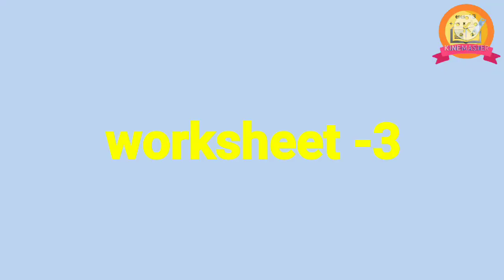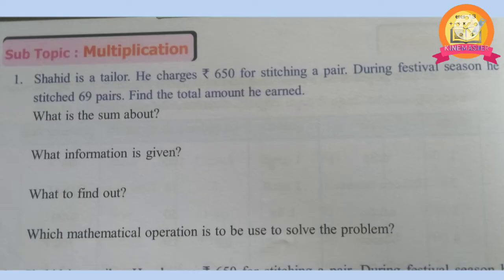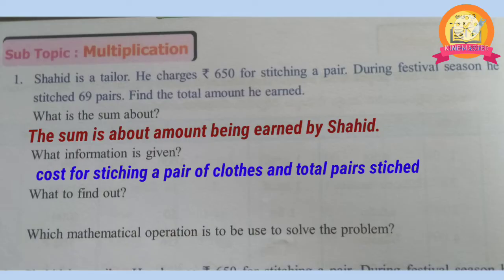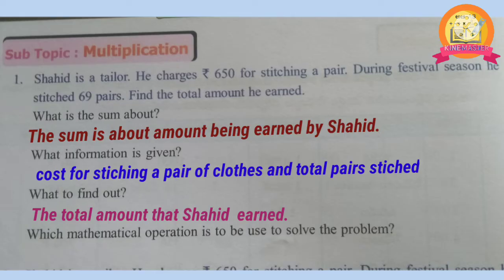Worksheet 3, first problem: Shahid is a tailor. He charges 650 rupees for stitching a pair. During festival season, he stitched 69 pairs. Find the total amount he earned. The cost of stitching 1 pair and total pairs stitched are given. We have to calculate the total amount Shahid earned. The operation to use is Multiplication.